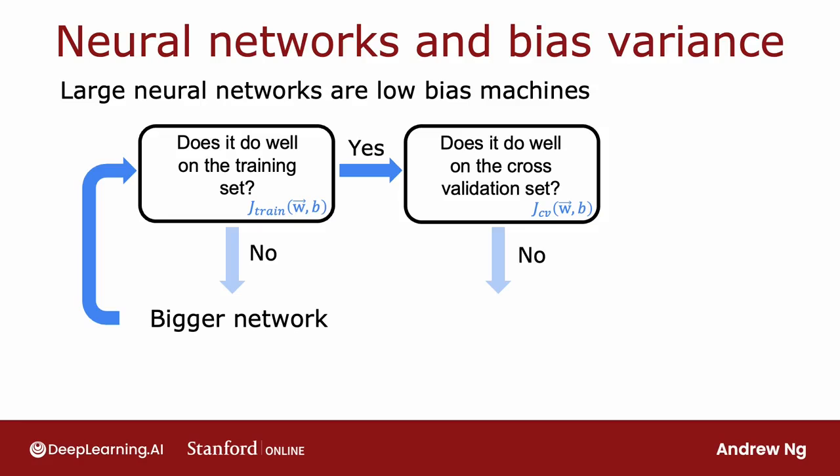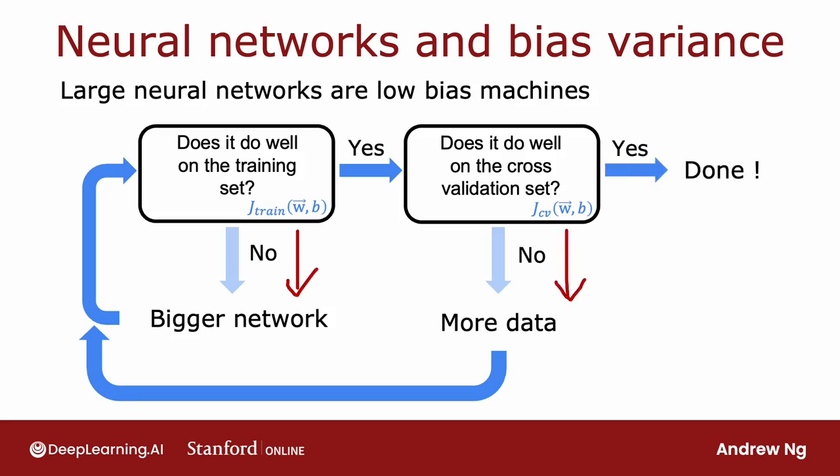And if you have a high variance problem, then one way to try to fix it is to get more data. So you get more data and go back and retrain the model and just double check, does it do well on the training set? If not, have a bigger network. Or if it does, see if it does well on the cross validation set. And if not, get more data. And if you can keep on going round and round this loop until eventually it does well on the cross validation set, then you're probably done. Because now you have a model that does well on the cross validation set and hopefully will also generalize to new examples as well.